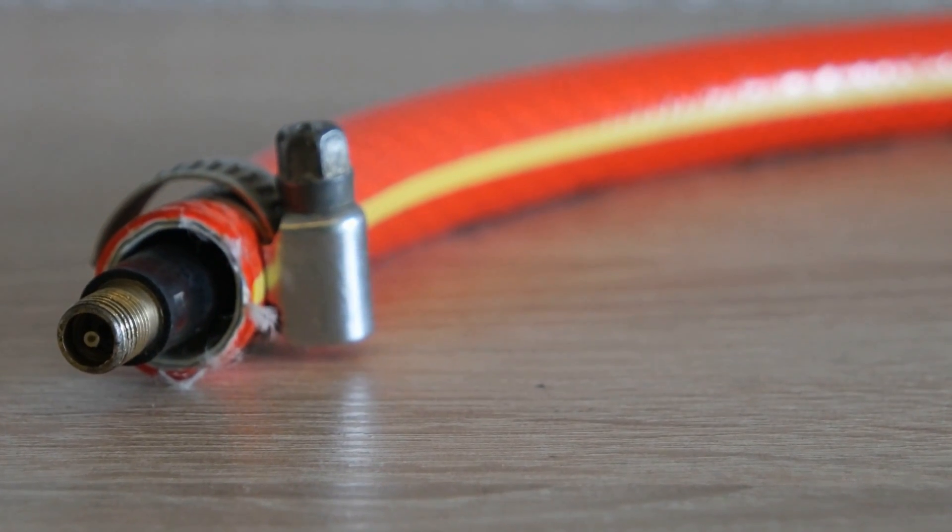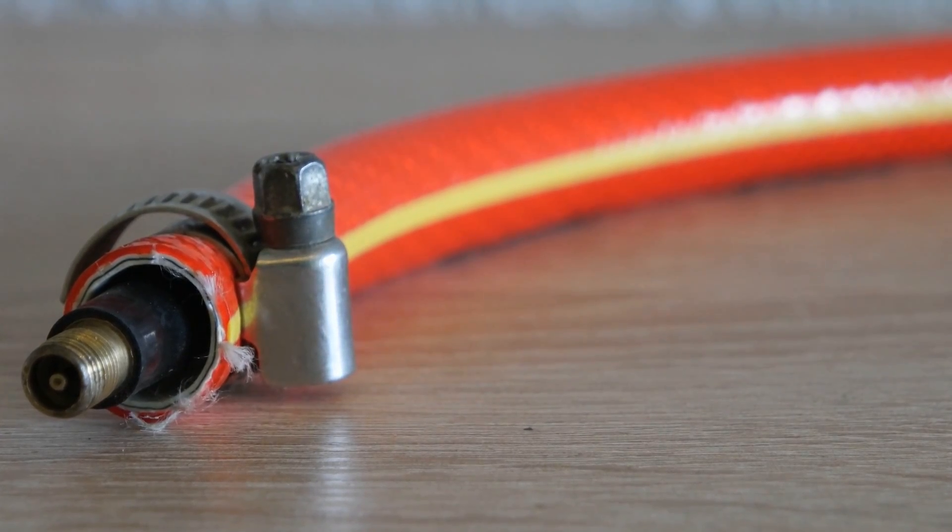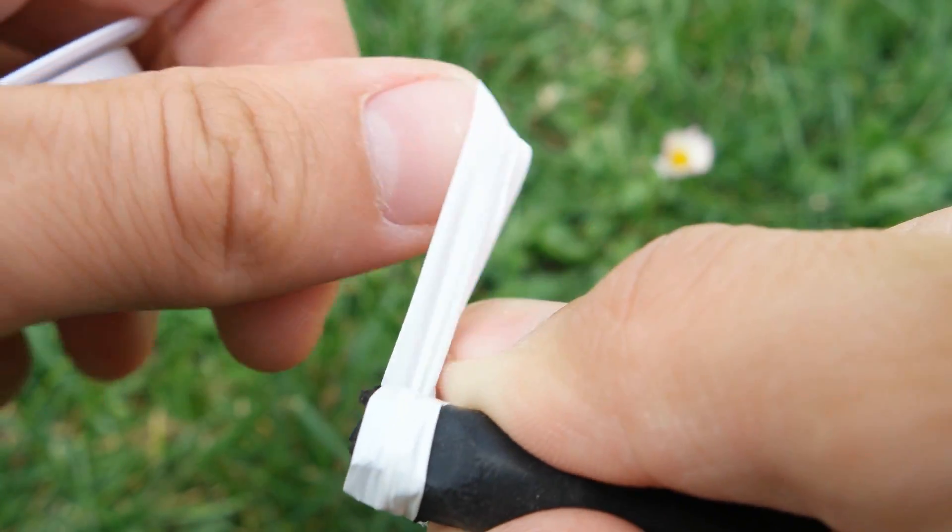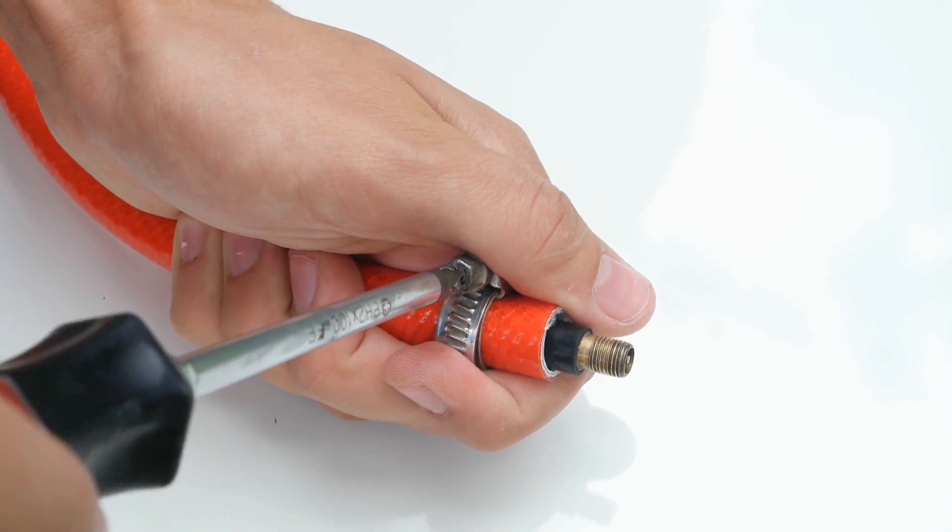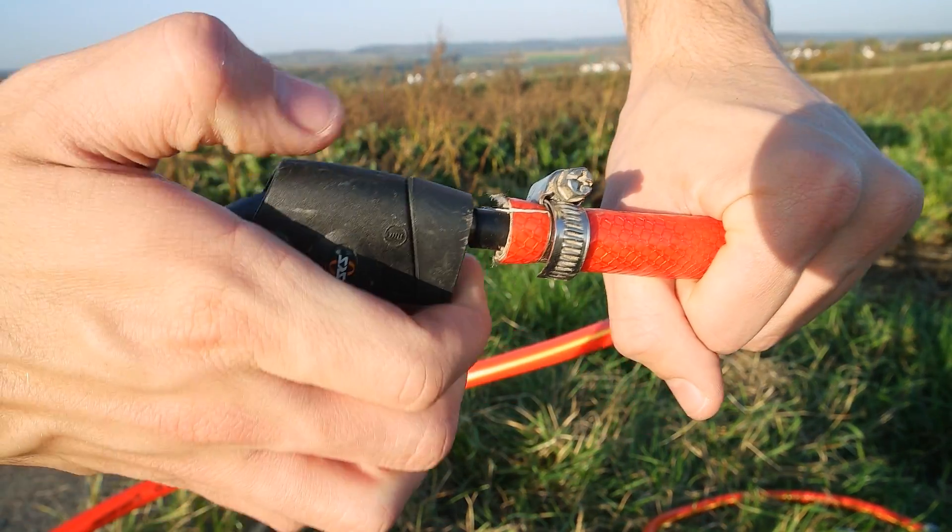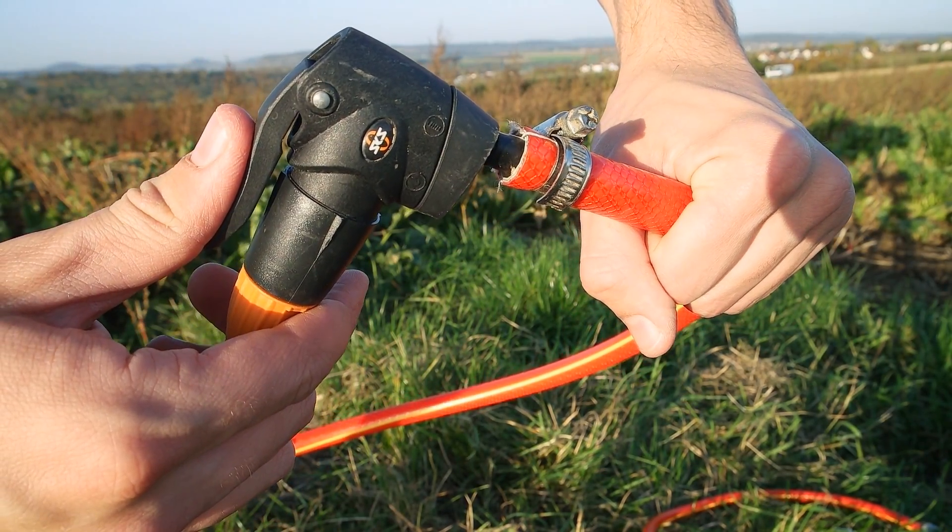On the other side of the hose you have to attach a car tire valve. Sand it, wrap it with Teflon tape, put it into the hose and fix it with a hose clamp. You can now connect your air pump to this valve and build up pressure in the rocket.